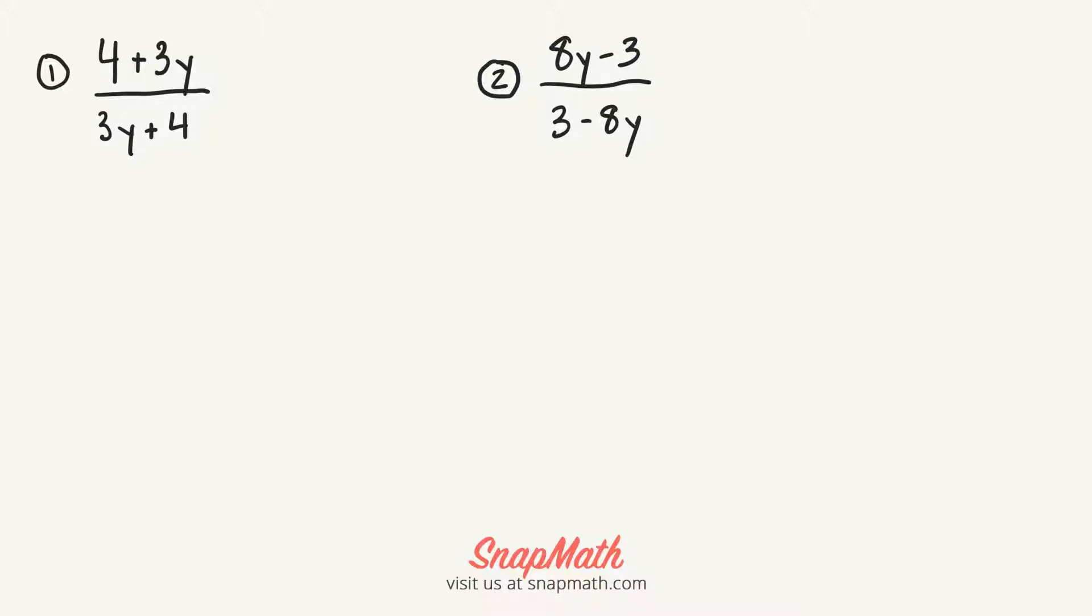So in this first question, you have 4 plus 3y over 3y plus 4. These are essentially the same thing.